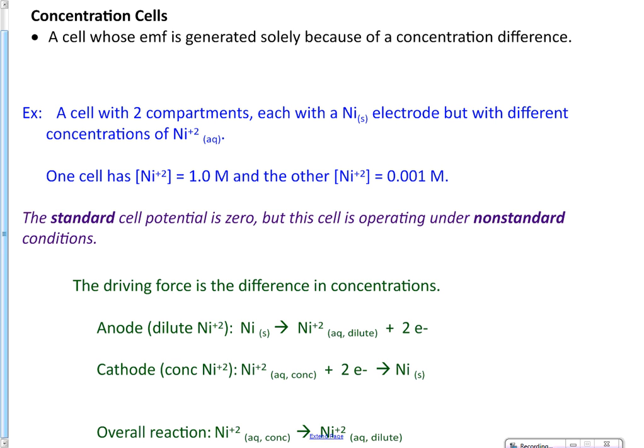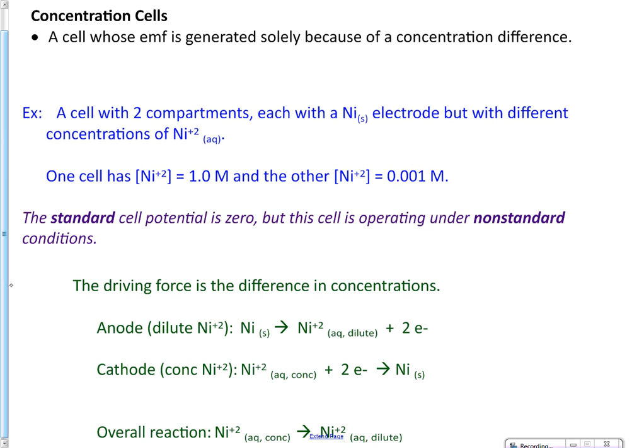So how do we actually figure out what the overall reaction is here? What we can do is we can just add these two reactions together. And if you keep your arrows lined up, you'll see that the two electrons would cancel, as would the nickel solids. So our overall reaction is to start with concentrated nickel ion and end with dilute nickel ion.